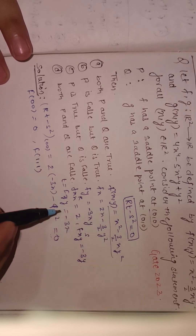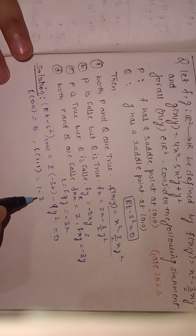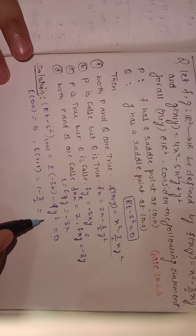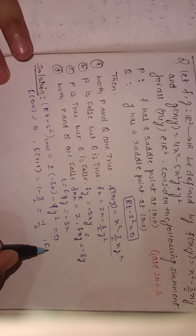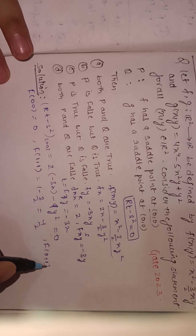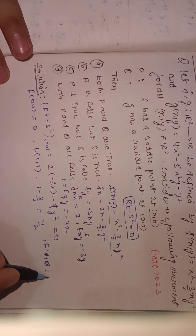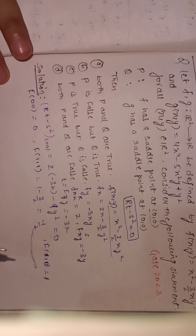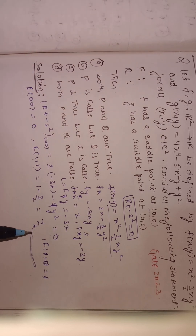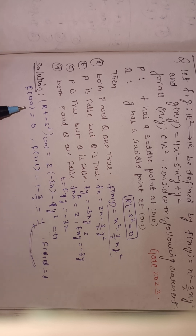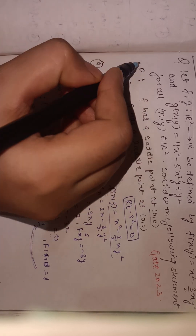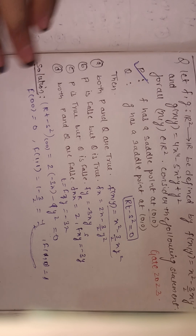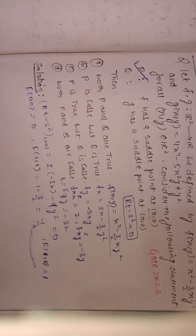We check f(1,1) = 1 - 3/2 = -1/2, and f(1,0) = 1. Since the function value is negative at (1,1) and positive at (1,0), the function changes sign in the neighborhood of (0,0). Therefore f attains neither a local maximum nor a local minimum at (0,0), confirming that (0,0) is a saddle point of f.